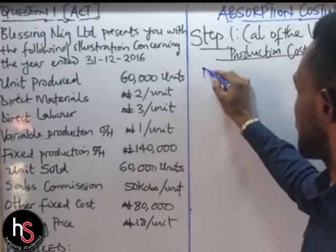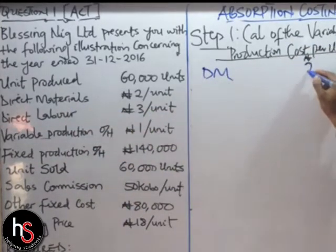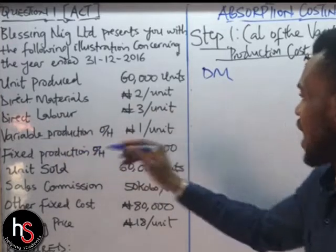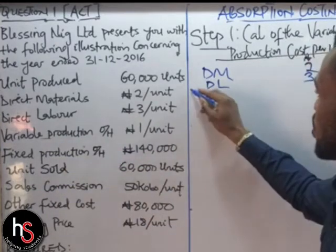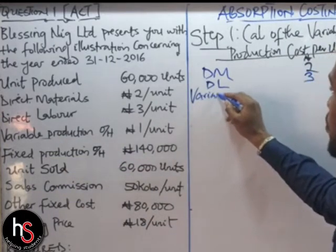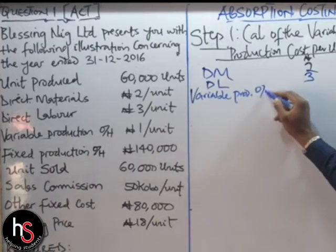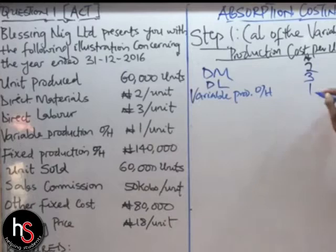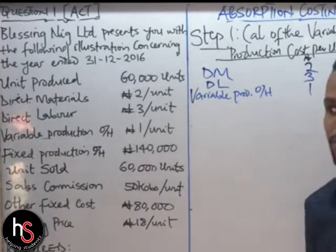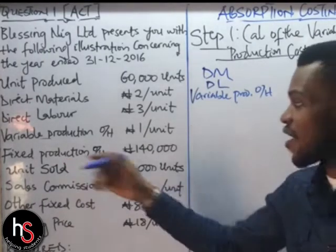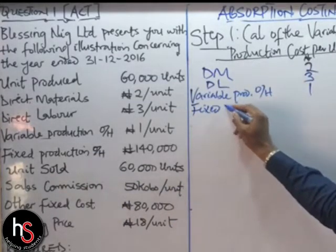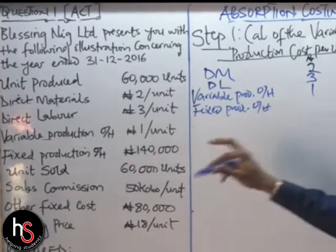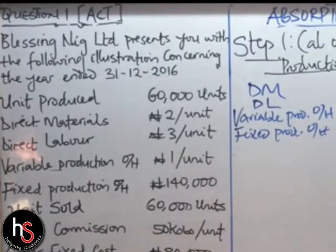We have direct material at 2 Naira, direct labor at 3 Naira, and variable production overhead at 1 Naira. Because it is the Absorption Costing Technique, we are also going to recognize our fixed production overhead. Now, this fixed production overhead is given as a total value — unlike the others which are given as per-unit values.